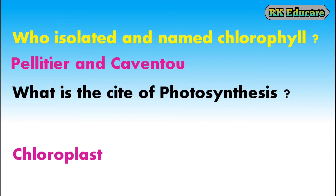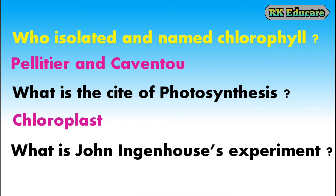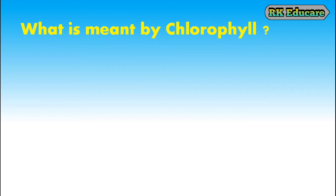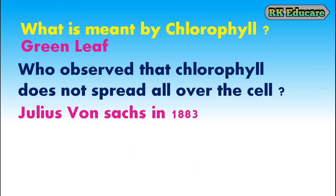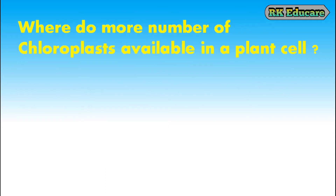What is the site of photosynthesis? Chloroplast is the site of photosynthesis. What is John Ingenhousz's experiment? The Hydrilla funnel experiment is John Ingenhousz's experiment. What is meant by chlorophyll? Chlorophyll means green leaf. Where is chlorophyll located in a plant cell? Chlorophyll is located in the chloroplast of a plant cell.